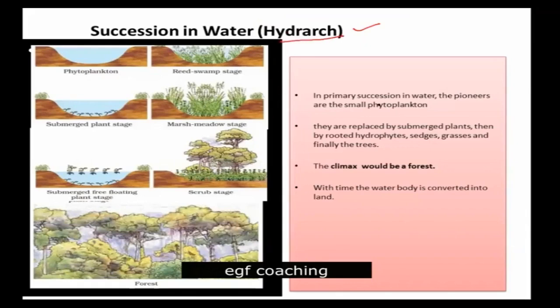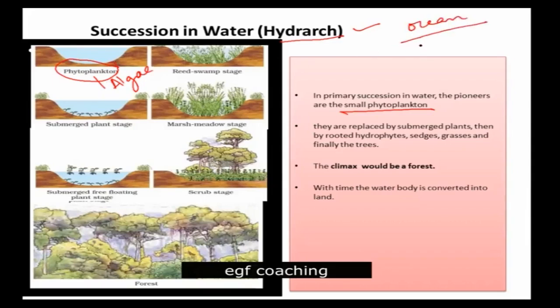Hydrarch will start with phytoplankton. Phytoplankton is our small algae. In the ocean, the majority of photosynthesis is carried out by phytoplankton. So first of all, phytoplankton starts growing.